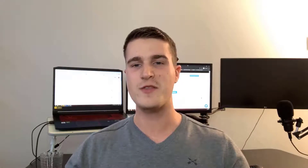So it kind of looks like this: you install Google Tag Manager on your website once and put all your tracking code inside tags. And when the user lands on your website, Google Tag Manager loads once, and then the Google server sends the data to the other third parties.